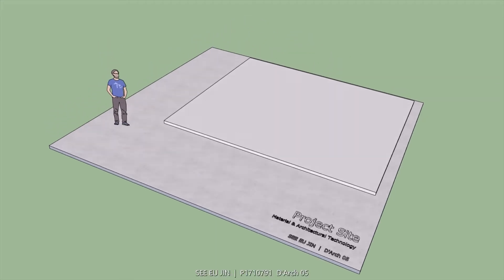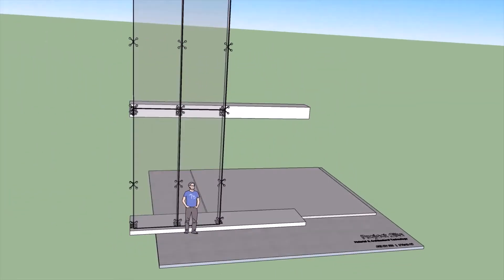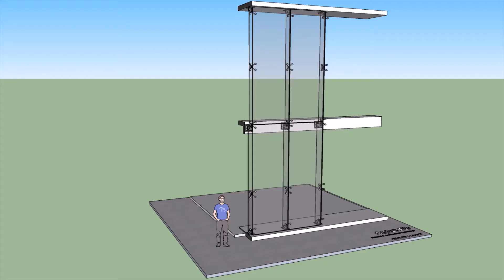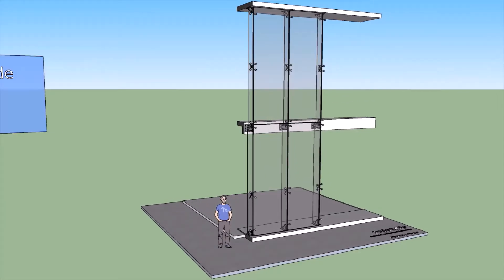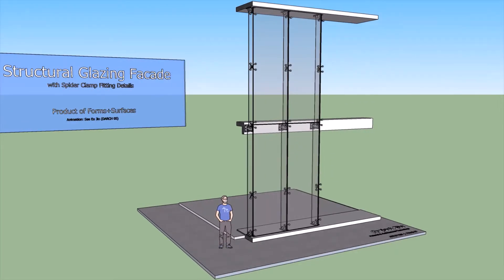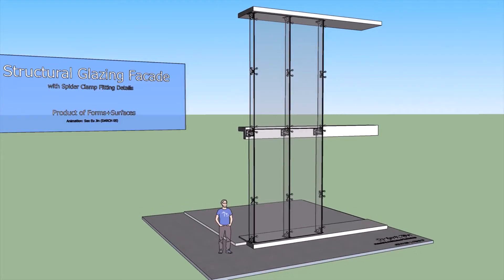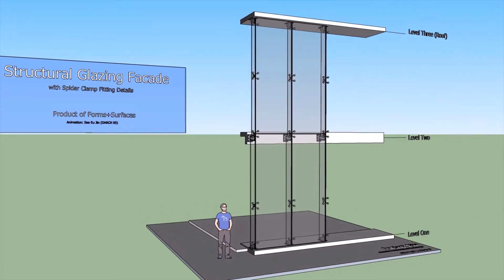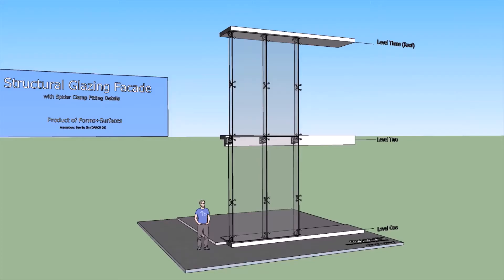Hi everyone, this is Eugene from Studio 05. Today I'll be showing the step-by-step construction process of a structural glazing facade that utilizes thin glass and spider fittings. This product was adapted from Form Sam Services, a company that specializes in designing and manufacturing a wide range of architectural products.